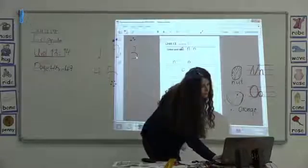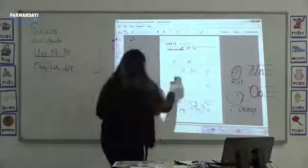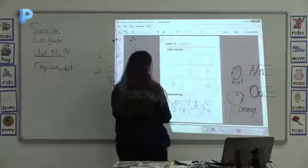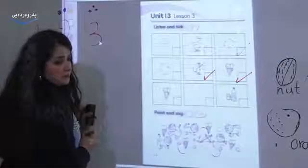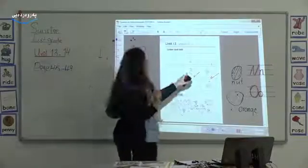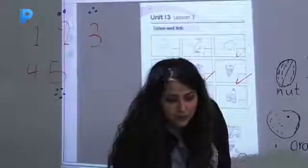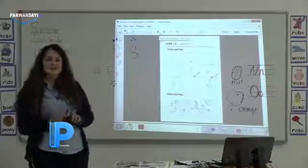Activity book, unit 13, lesson 3: listen and tick. Where is fig? This is fig — tick it. This is mouse — ice cream. Mouse, ice cream, fig.